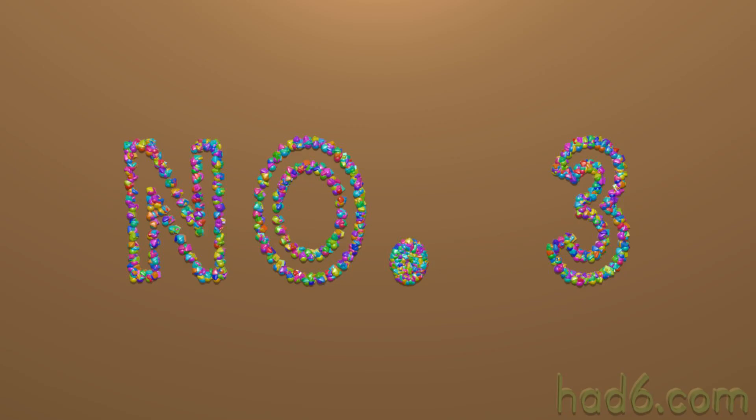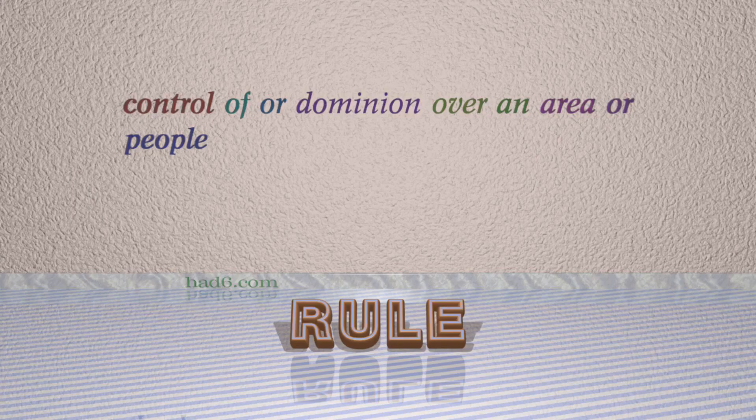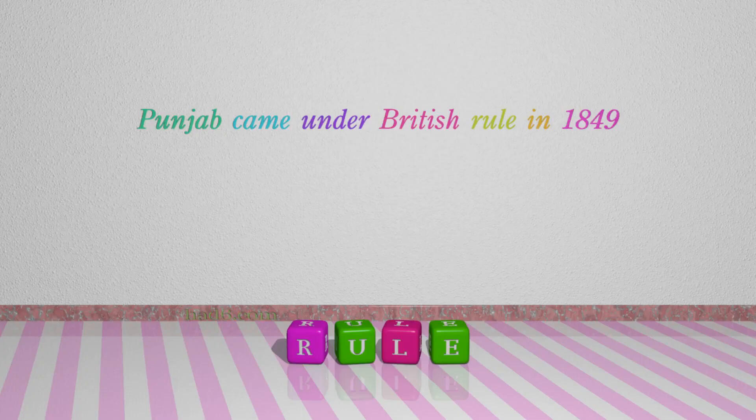Number 3: Rule. Which means control of or dominion over an area or people. For example: Punjab came under British rule in 1849.